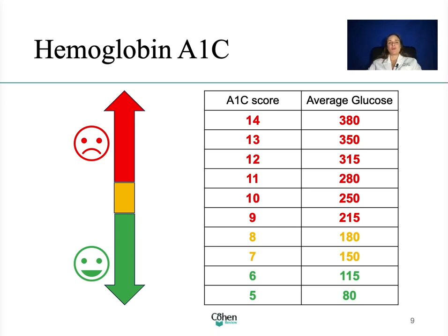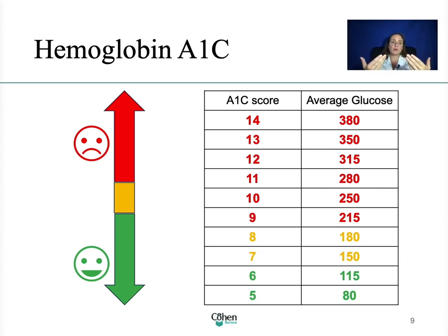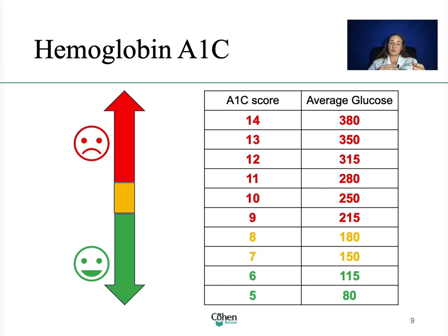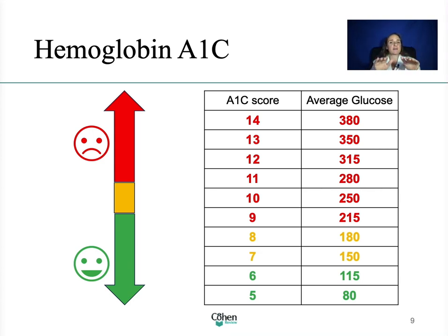We have hemoglobin A1C. The A1C is a blood test that measures the average of the sugar levels in the past three months. It is used to diagnose diabetes and helps with the management of diabetes. You should also consider the fasting glucose and random glucose for diagnosis in addition to the A1C. This is very helpful because someone may eat very healthy two or three days before a blood test and you may miss that they have diabetes — looking at three months' worth gives doctors an idea of what the sugars have been.